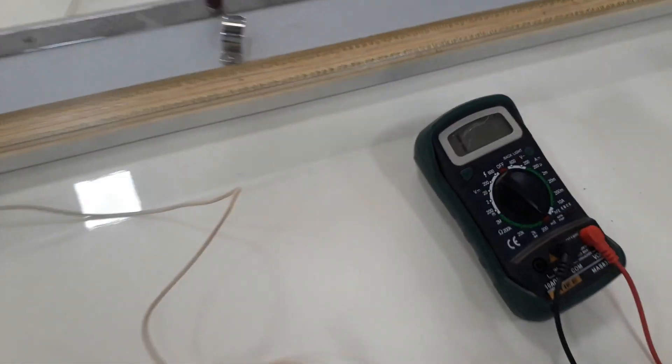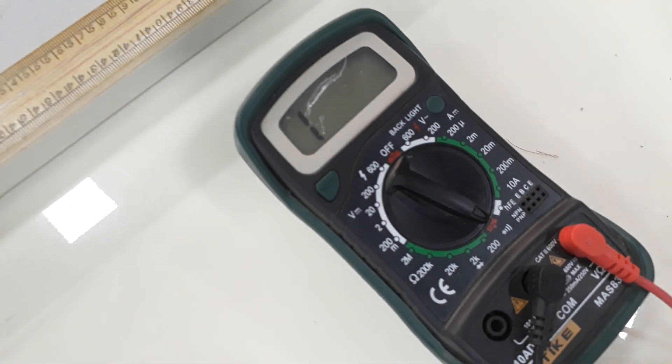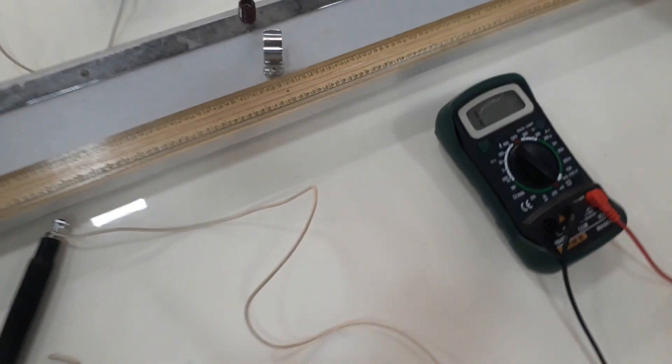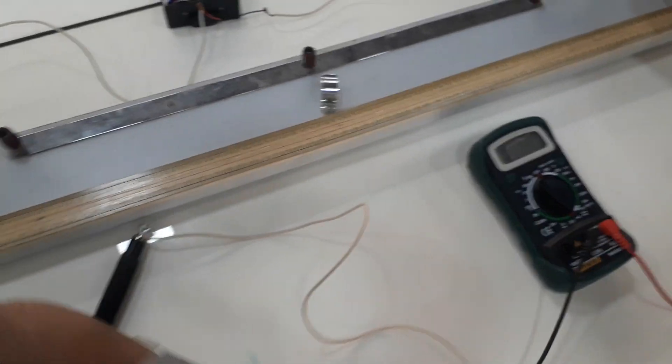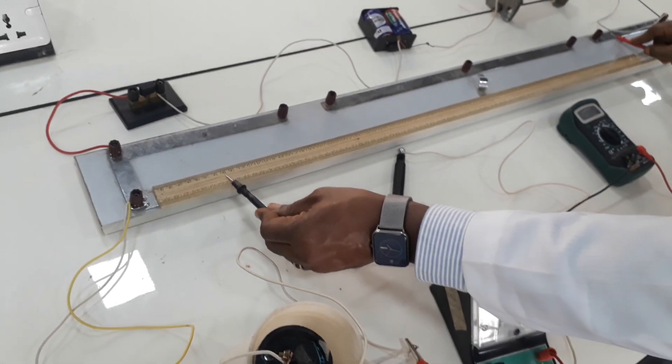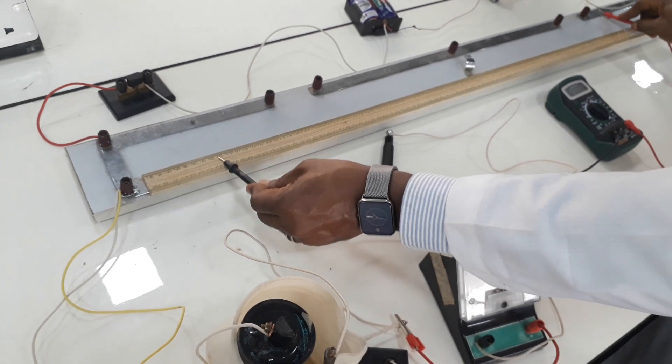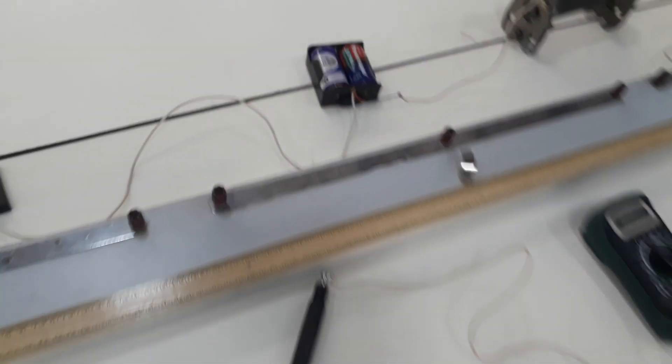For us to check if there's an open circuit, we have to put the multimeter on the continuity mode. And once I place my probes between the terminals that I want to check, it will be. Did you hear that? That tells me now that there is no open circuit.